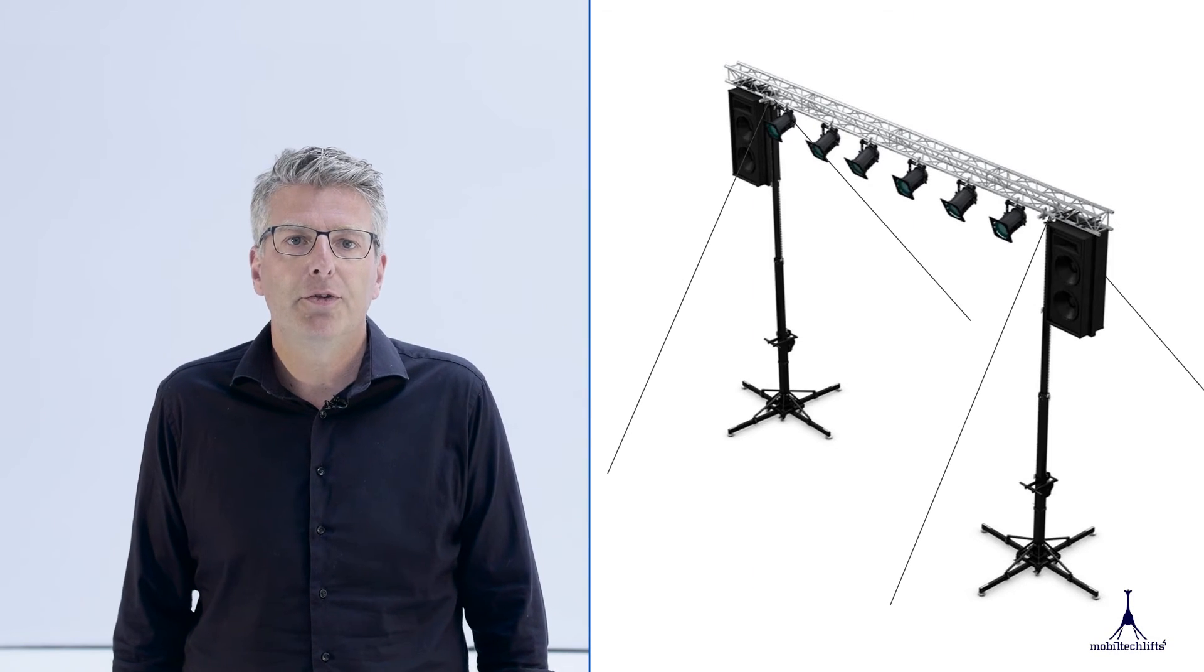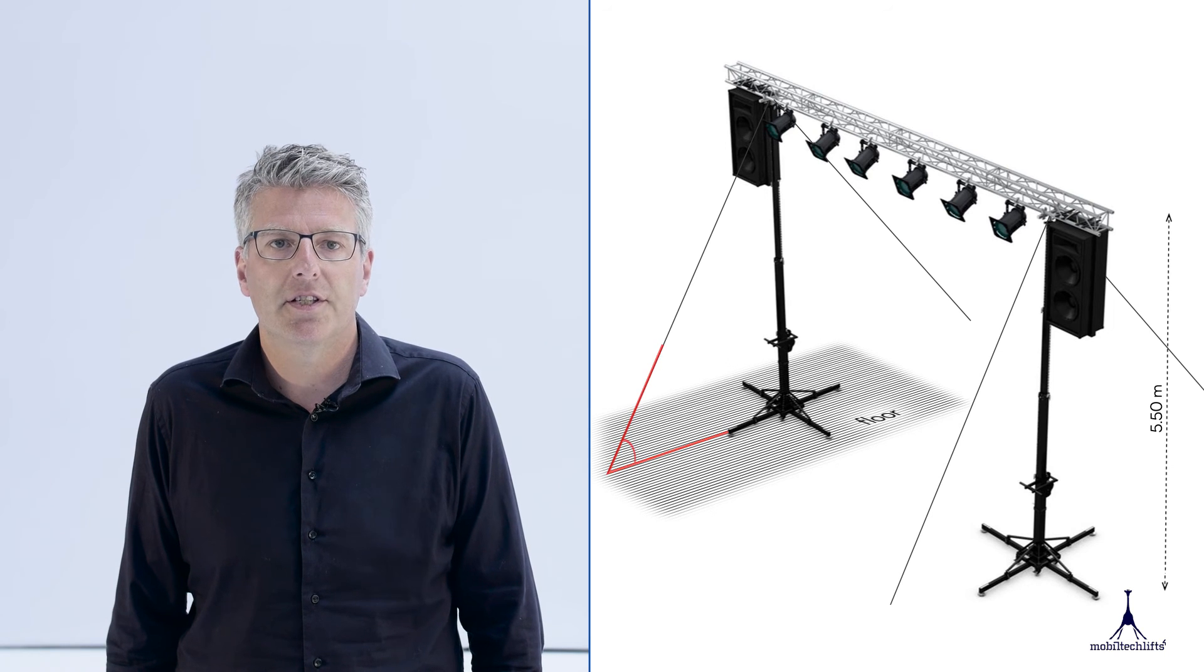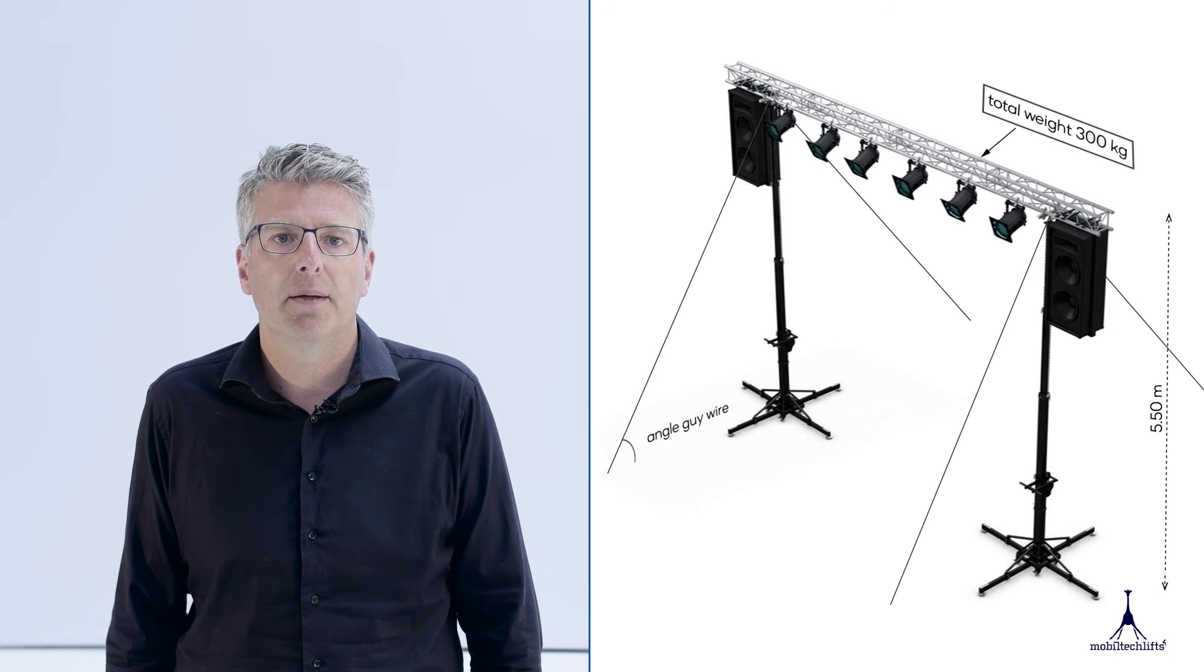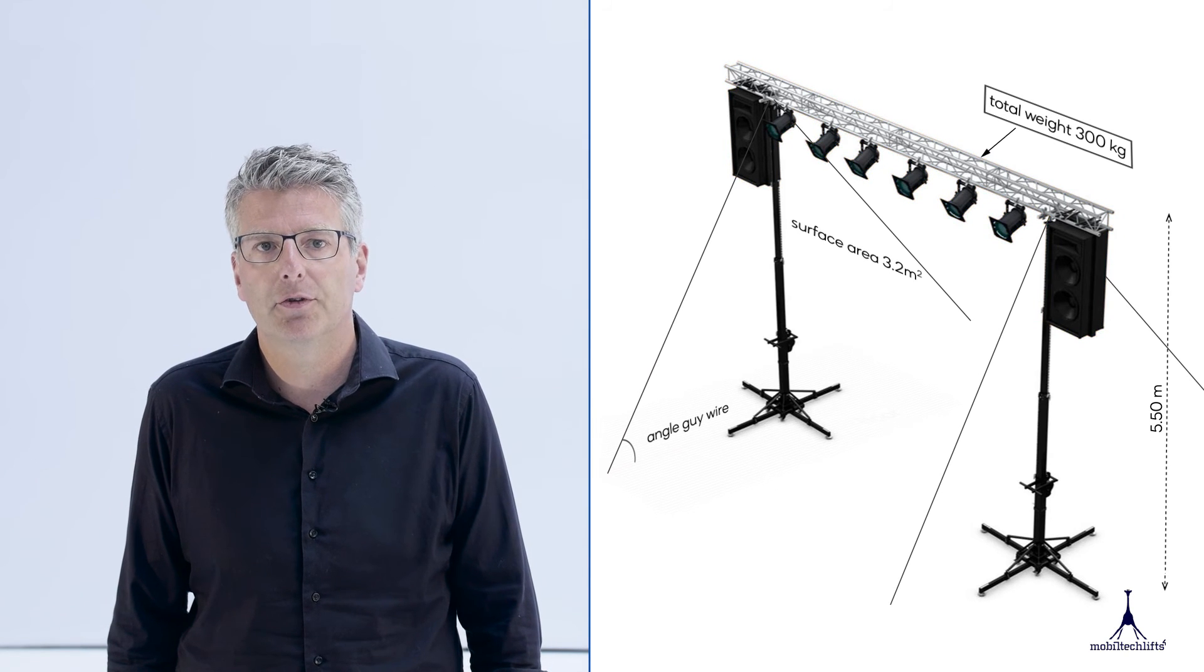As an example we took a common goal post setup made with ML2 lifts. The self-weight of all loads is 300 kilograms and the total surface area exposed to wind is 3.2 square meters.